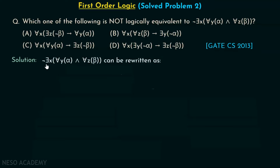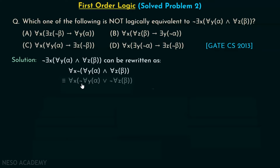The expression 'not of there exists x, for all y alpha and for all z beta' can be rewritten as: for all x, not of (for all y alpha and for all z beta). Moving the negation further right gives: not for all y alpha, or, not for all z beta. Moving the negation again gives: there exists y, not alpha — or — there exists z, not beta. This is the final equivalent expression.